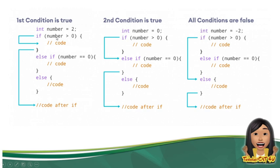Pag basta once na nag-true yung given condition na yan. For example naman dito, ang number ay 0. Ang 0 ba is greater than 0? Nag-false di ba? Ibig sabihin, bababa siya sa susunod na else if o sa susunod na condition. Sabi niya dito, number is equal equal to 0. Yung 0 yung number natin. 0 is equal equal to 0. Ibig sabihin, gagawin niya yung block of code dito. After niya magawa yung block of code na yan, hindi na siya bababa sa else.